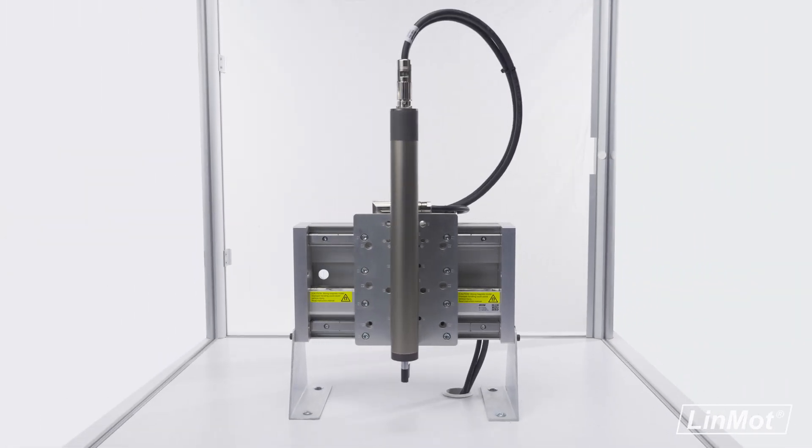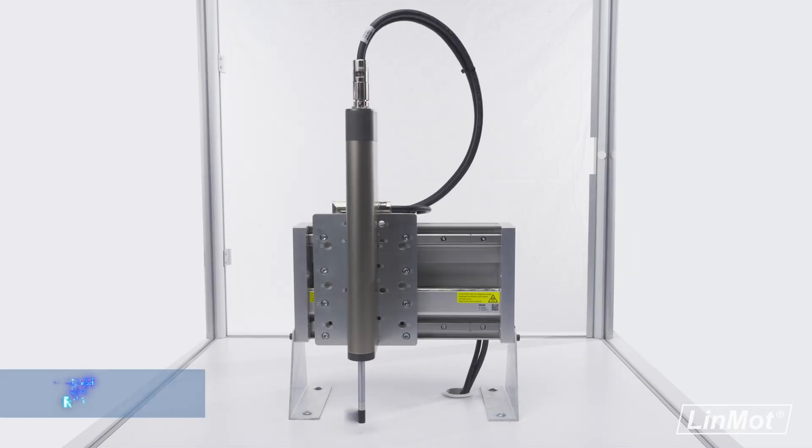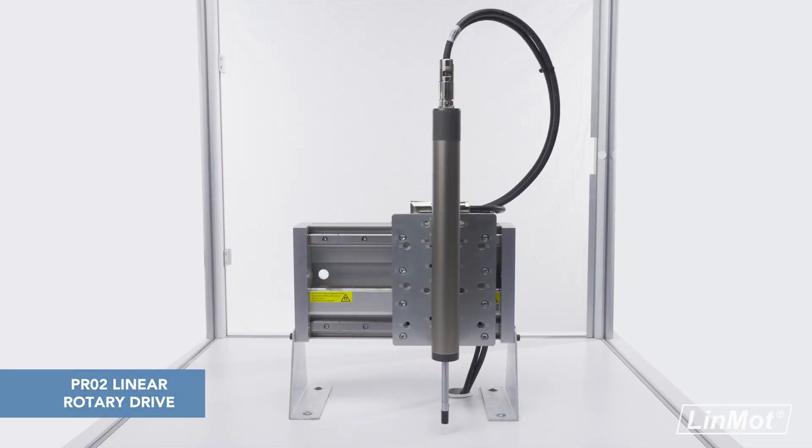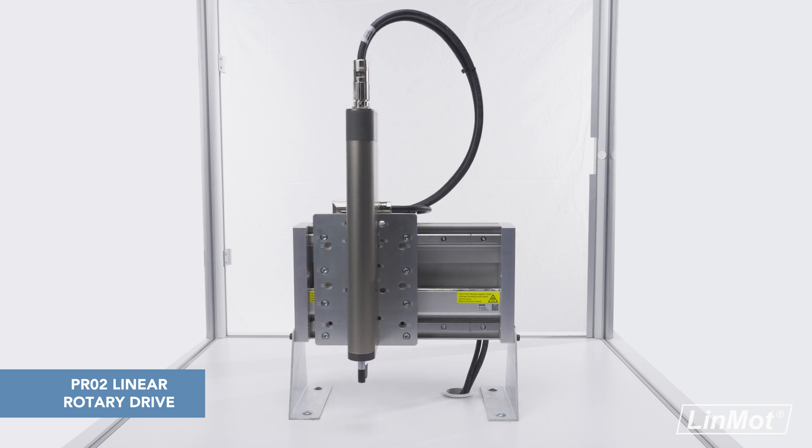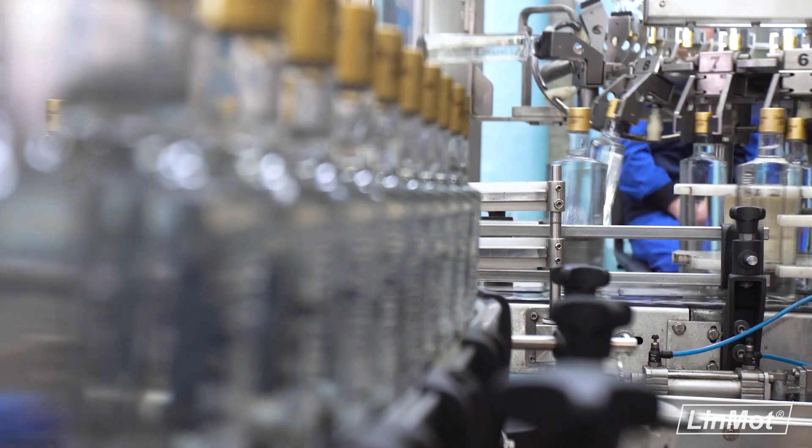Need reliable capping or assembly? Then you need Linmot. The Linmot PR-02 Linear Rotary Drive is ideal for a variety of applications, such as aligning baby wipes, capping bottles, product placement, and more.